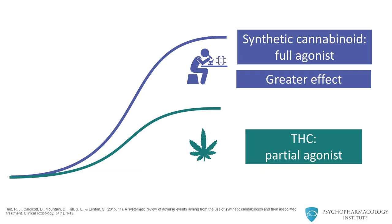While synthetic cannabinoids are full agonists at CB1 receptors, THC is known to be a partial agonist. As such, the synthetic cannabinoids impact upon the cannabinoid CB1 receptor with much greater force and produce a correspondingly much greater effect on the psyche.